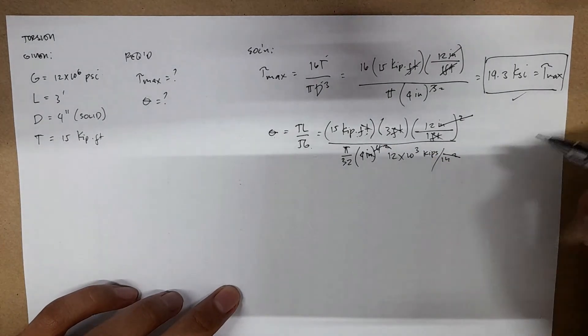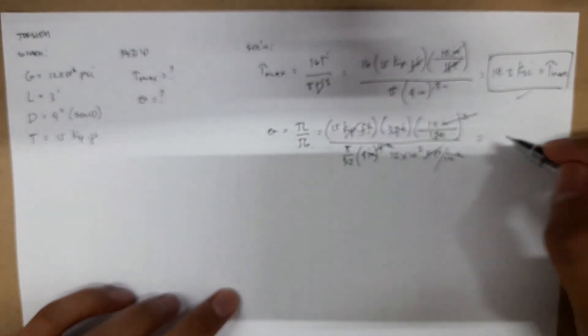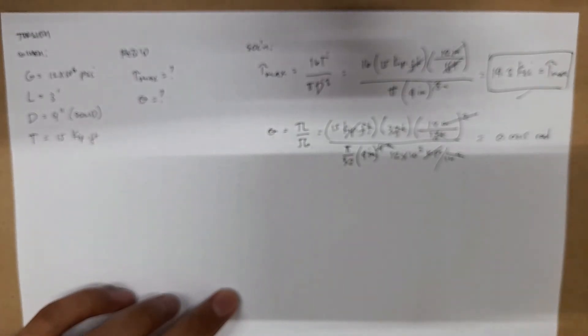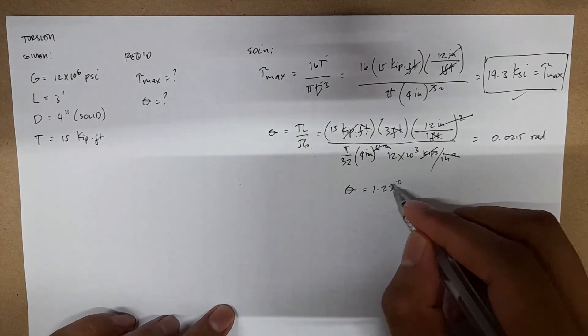So we now have radians. The kip source will cancel out with this, which equals 0.0215 radians. In terms of degrees, we'll have 1.23 degrees.